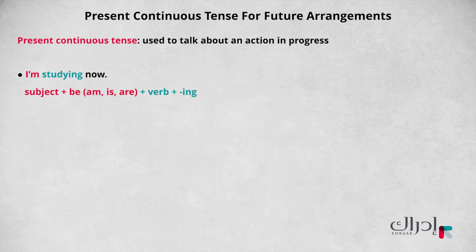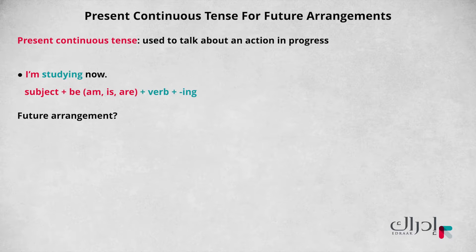And in other cases, also about the future, to make future arrangements. So, how can we use the present continuous tense to talk about only future arrangements?